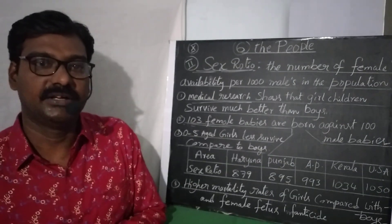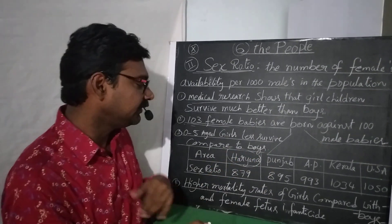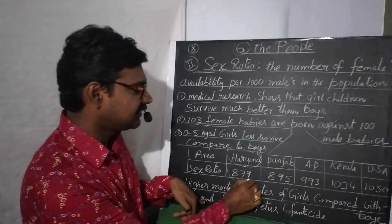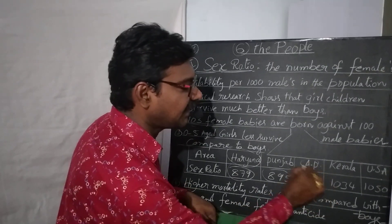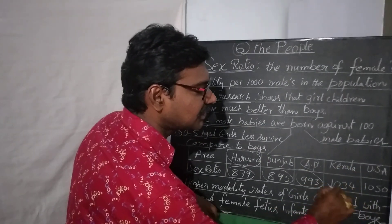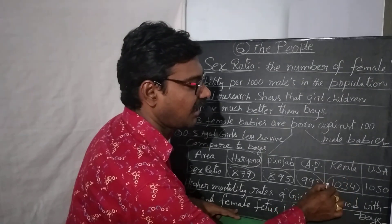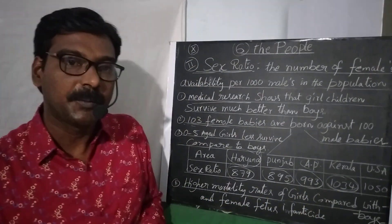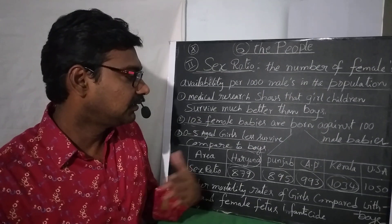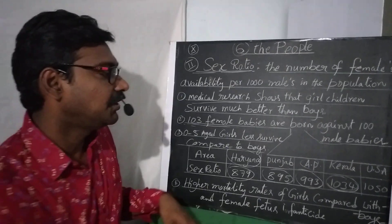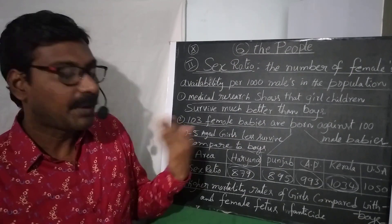According to a table in our textbook: Haryana has a sex ratio of 879, Punjab has 895, Andhra Pradesh has 993, and Kerala has 1034. This means in Kerala there are 1034 females per 1000 males, giving Kerala a positive sex ratio compared to other states.